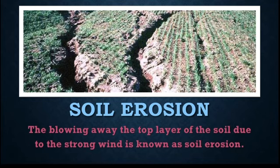Some human activities like cutting of trees, farming, grazing of animals and so on can also result in soil erosion. So how do we prevent soil erosion? The roots of plants hold the soil together, so by planting more and more plants we can reduce soil erosion.